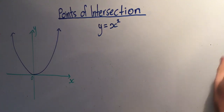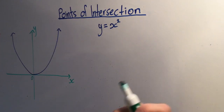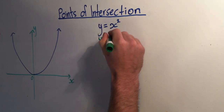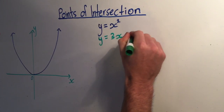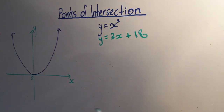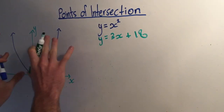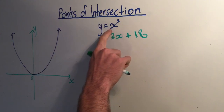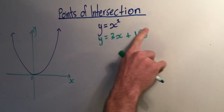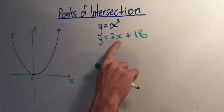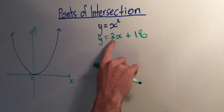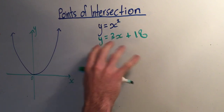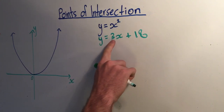The second line I'm going to do is y equals 3x plus 18. I've drawn the parabola y equals x squared — it's a parabola because we have a quadratic on the other side of y. For the other equation, you can see there's no x squared; it's just mx plus b. So it's a straight or linear line with a constant gradient.